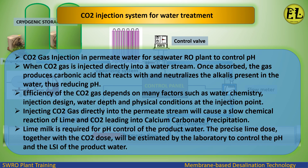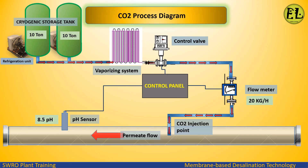Injecting CO2 gas directly into the permeate stream causes a slow chemical reaction of lime and CO2, leading to calcium carbonate precipitation. Lime milk is required for pH control of the product water. The precise lime dose together with the CO2 dose will be estimated by the laboratory to control the pH and the LSI of the product water. CO2 from two vertical vacuum-insulated liquid storage tanks is maintained with the help of refrigerant cooling units.